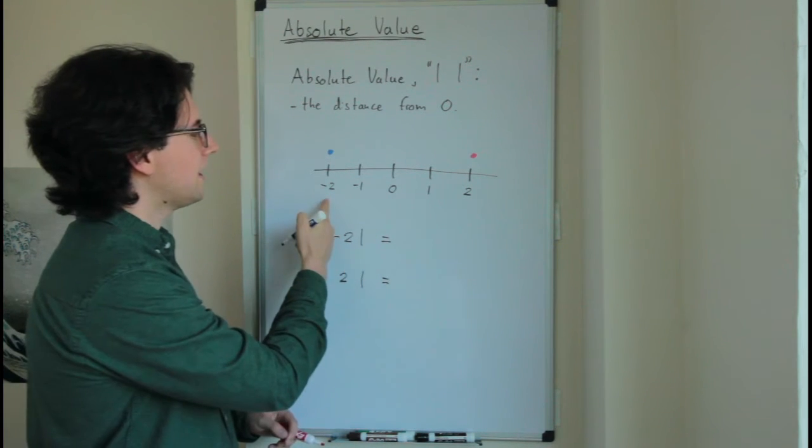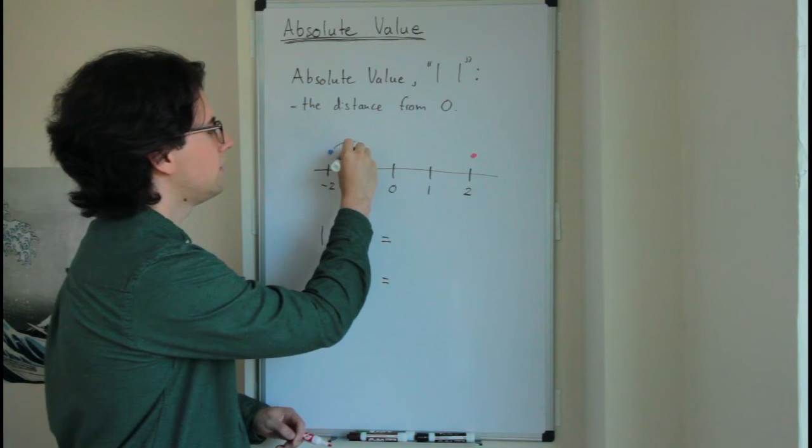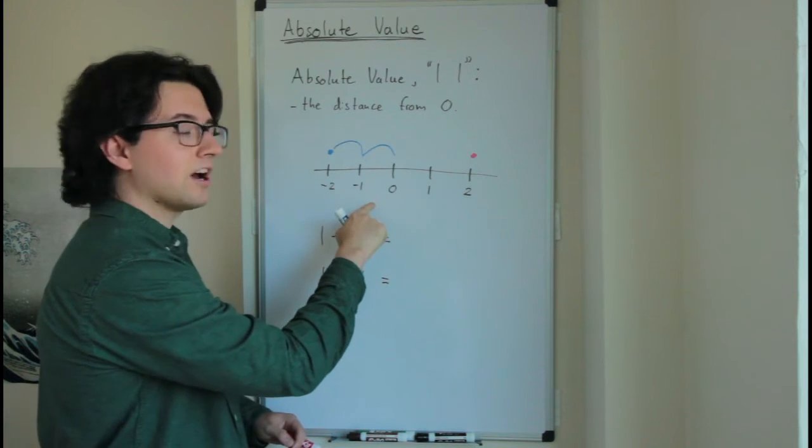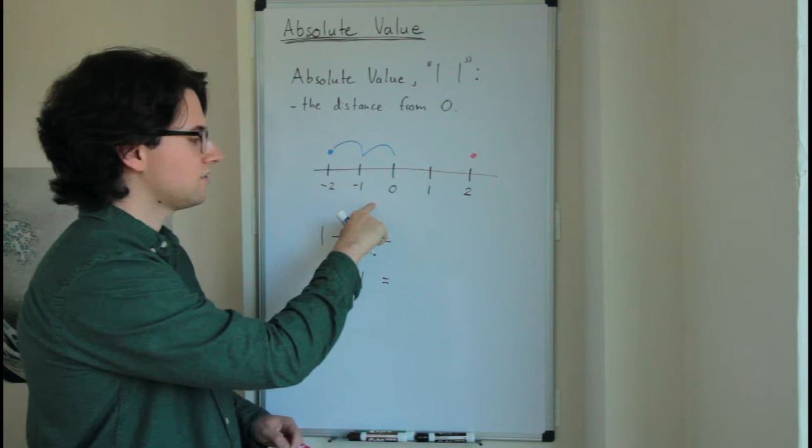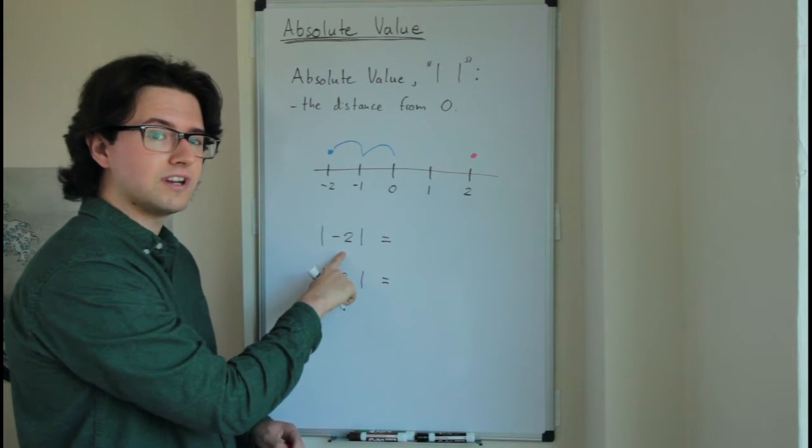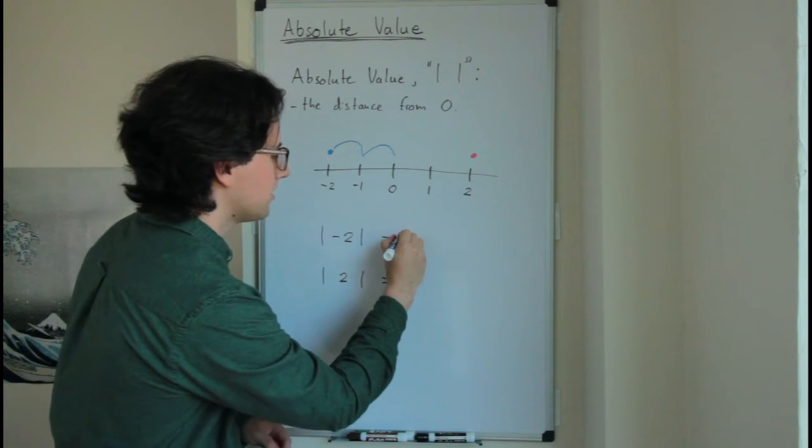So if I start at negative two and I move to the right, I've traveled two spaces to get to zero. So the absolute value of negative two will be two.